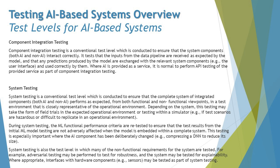System testing is also the level at which many non-functional requirements are tested. For example, adversarial testing may be performed to test for robustness, and the system may be tested for explainability where appropriate. Interfaces with hardware components may also be tested as part of system testing. Any attribute that could be adversely affected by the overall system integration should be measured at this point.